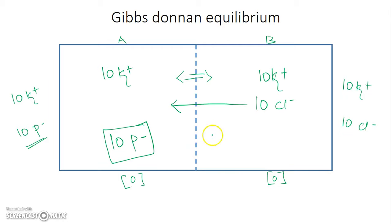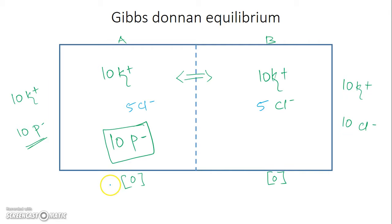What will happen if this is allowed to reach equilibrium? The chloride moves from 10 and attains equilibrium — let us assume 5 on each side. At this point, the distribution of charges is no longer equal: on side A the number of positive ions is 10 but negative ions is 15, giving 5 extra negative charges, while side B has 5 extra positive charges.